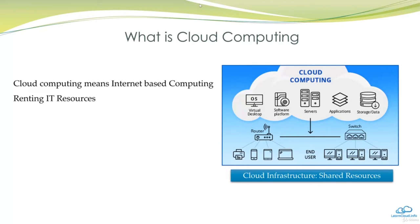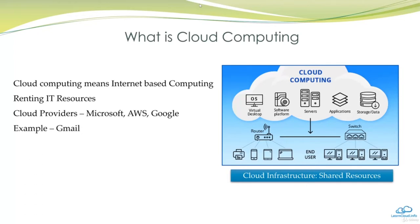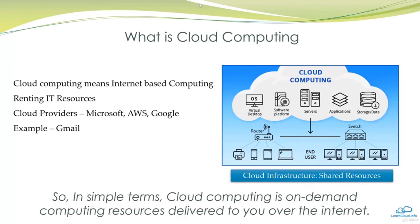Cloud computing is like renting IT resources — just like electricity — where a company rents resources like virtual machines, storage, or applications from a cloud provider. The company providing these services is referred to as the cloud provider; examples include Microsoft, Amazon, and Google. For example, Gmail and Google Drive are cloud services provided by Google, free to a certain limit with the option to pay for more storage. In simple terms, cloud computing is on-demand computing resources delivered to you over the internet.